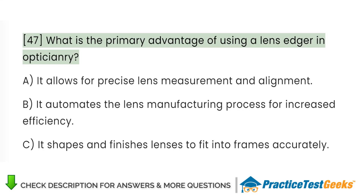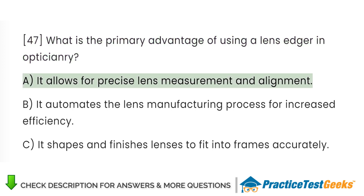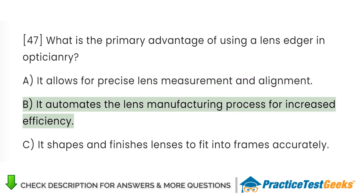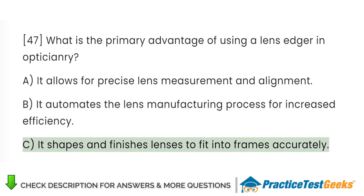What is the primary advantage of using a lens edger in opticianry? A. It allows for precise lens measurement and alignment. B. It automates the lens manufacturing process for increased efficiency. C. It shapes and finishes lenses to fit into frames accurately.